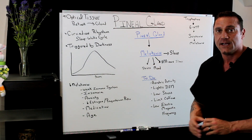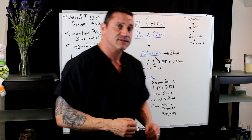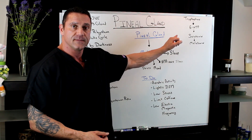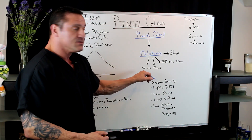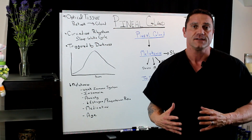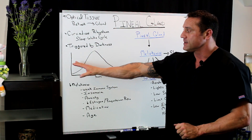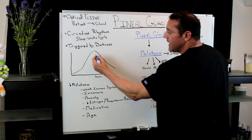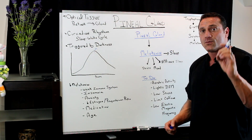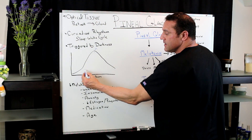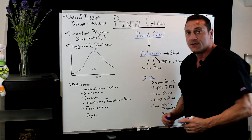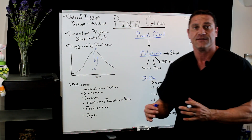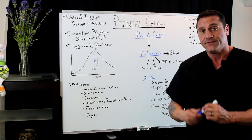Melatonin is also involved with mood. If you're not producing enough serotonin — which is involved with mood and mood disorders — you're not going to produce enough melatonin, leading to a mood disorder. Cortisol and melatonin are like a teeter-totter. Melatonin peaks at around 3 a.m., right around the same time cortisol is at its lowest. So when you're stressed out, cortisol elevates, melatonin decreases, and that causes poor sleep patterns.